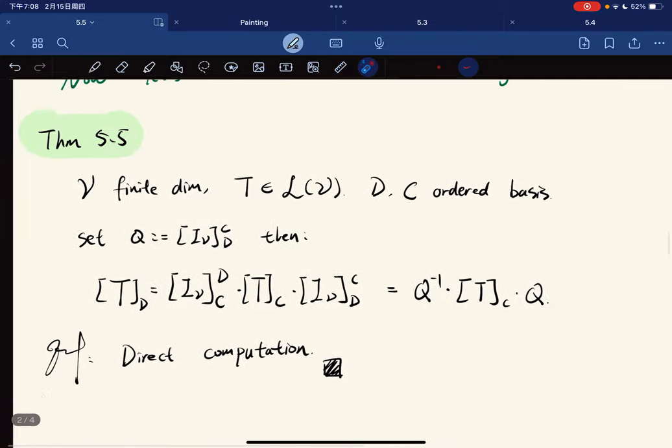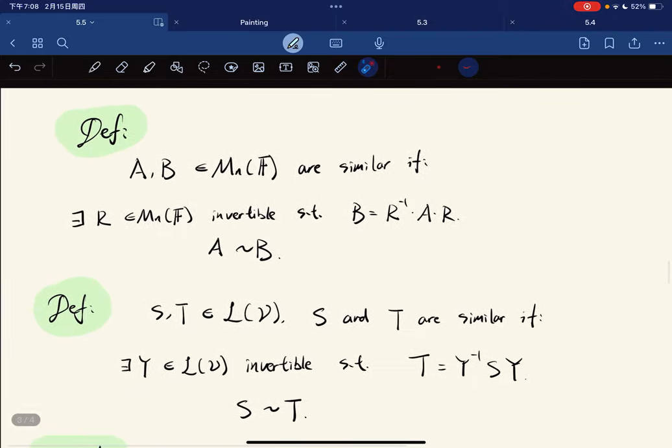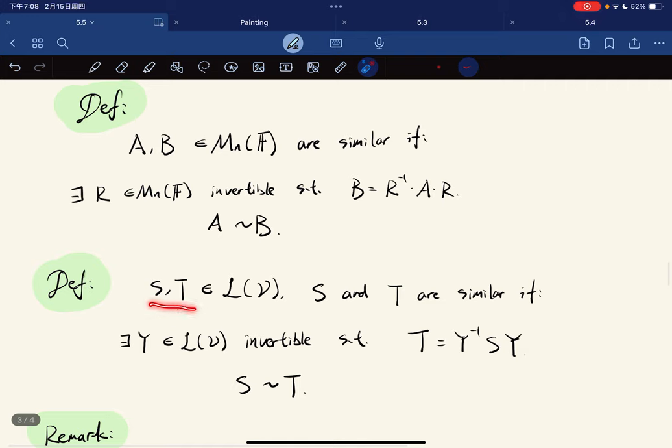This induces a new definition called similar matrices. If A, B are similar, then there is this invertible matrix such that you have R^{-1}AR. We say A is similar to B. Similarity extends to linear maps: if there exists an invertible linear map such that S is similar to T.